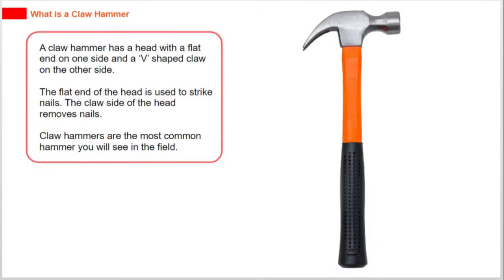A claw hammer has a head with a flat end on one side and a V-shaped claw on the other side. The flat end of the head is used to strike nails. The claw side of the head removes nails. Claw hammers are the most common hammer you will see in the field.